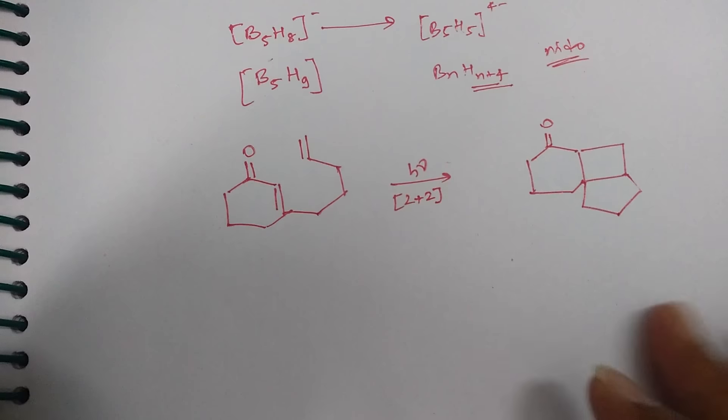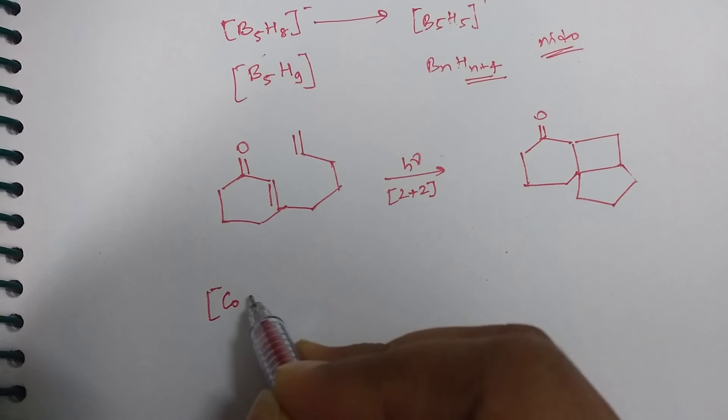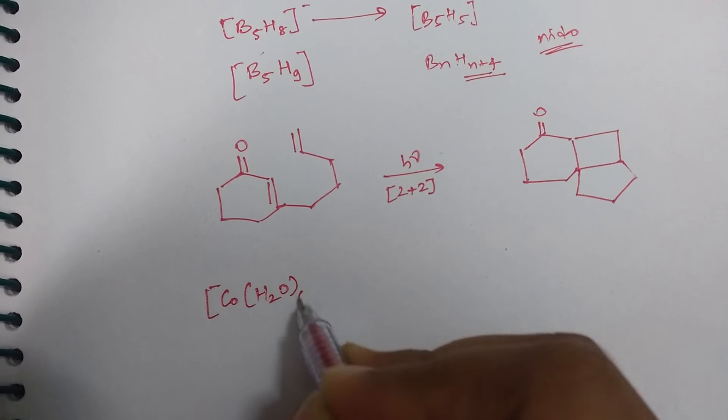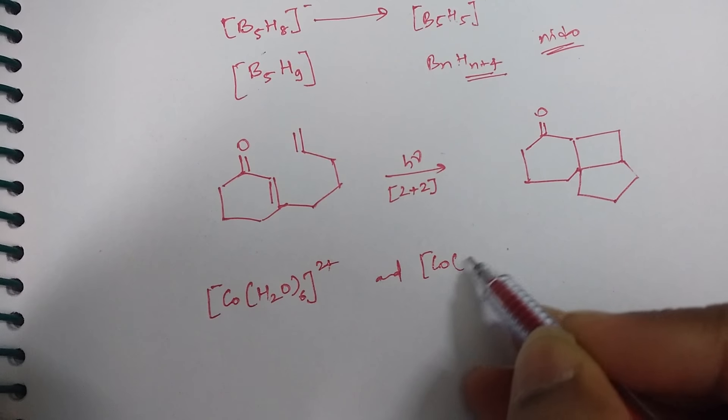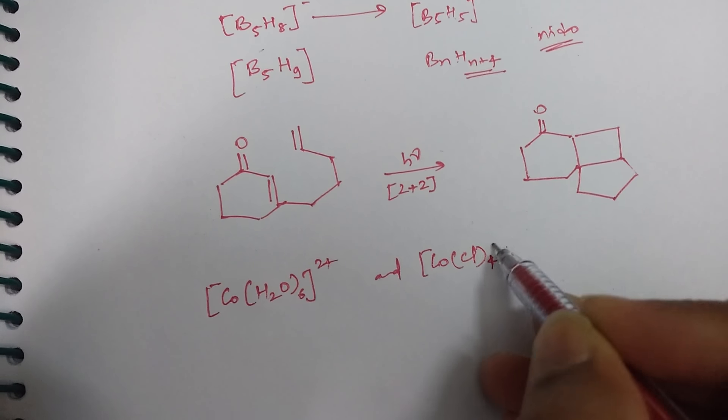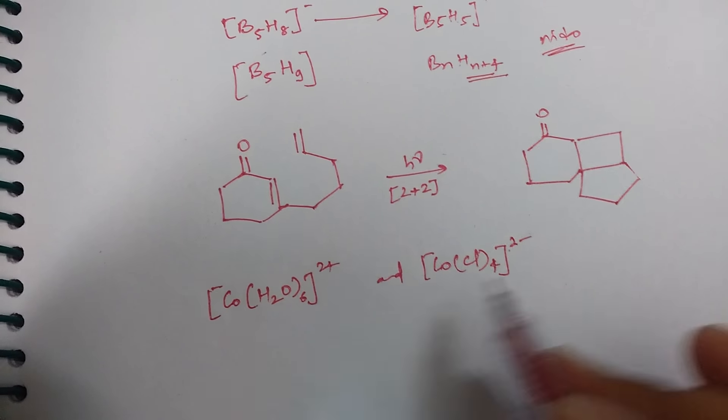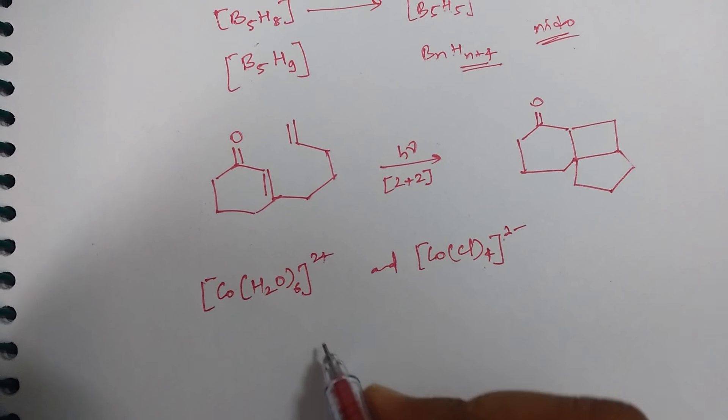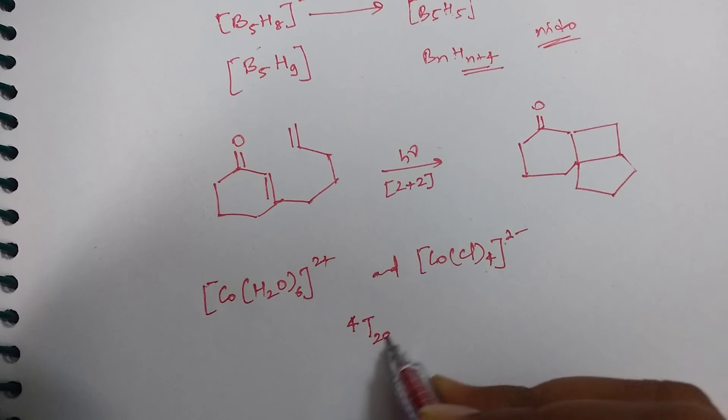So these are some of the questions which I remember. One more question was there in which ground state term symbol it was asked, for I think it was like Co(H2O)6 2+ and CoCl4 2-. This was the question, I don't remember exactly but somewhat it was like that only. The answer was what I remember is 4T2g and like 4A2, something like this.